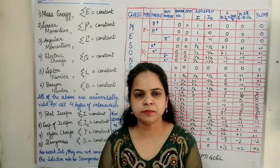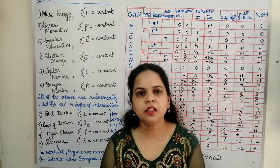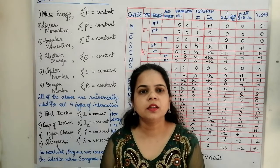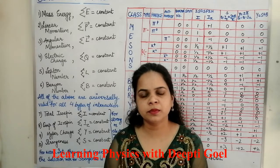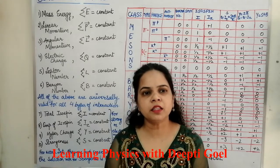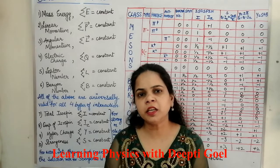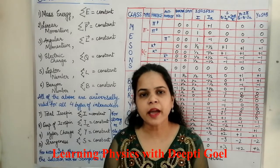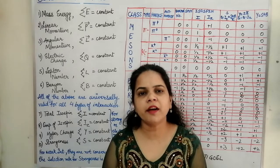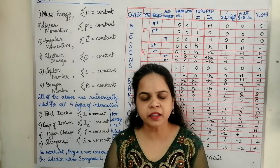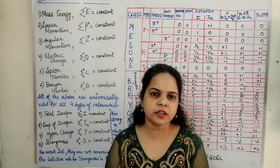Hello students, today we shall discuss the conservation laws that are to be followed by the elementary particles. Certain elementary particles are under the effect of the four fundamental types of interactions: gravitational interaction, electromagnetic interaction, weak interaction, and strong interaction.